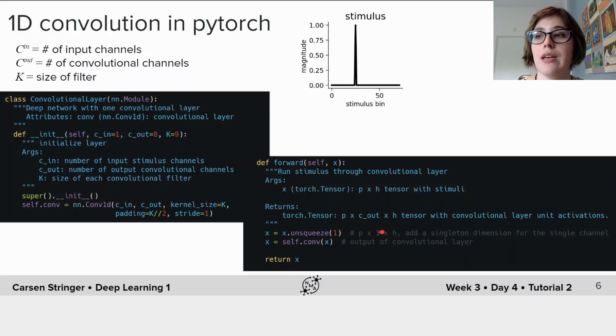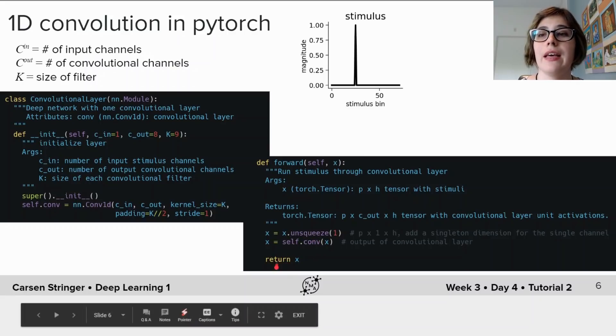The first thing we will have to do is we're going to have to add this single dimension which is adding this one-dimensional channel which is the c_in, and then after we add this dimension we can pass x through this convolutional layer and get our output.